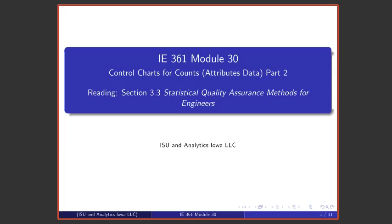Welcome to Module 30 in this series of lectures on Statistical Quality Assurance and Statistical Process Improvement. We're discussing control charts, and in particular control charts for counts, or so-called attributes data.